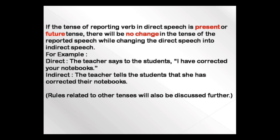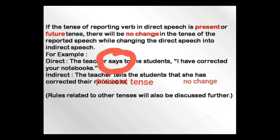This is the most important part to keep in mind. For example: 'The teacher says to the students, I have corrected your notebooks.' The reporting verb is 'says' — present tense — so there will be no change. It becomes: 'The teacher tells the students that she has corrected their notebooks.' If it were in future tense — 'will say' instead of 'says' — there is again no change. It becomes: 'The teacher will tell the students that she has corrected their notebooks.'